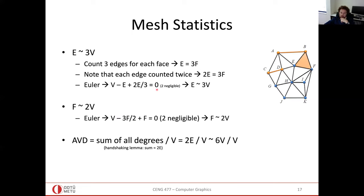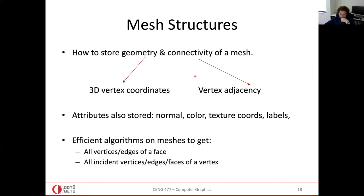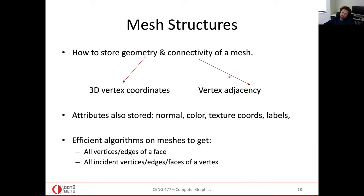Now let's talk about structural details on meshes in terms of programming — how do we store a mesh in our program? We will definitely need to store the vertex coordinates and the connectivity. Optionally, we can also store normal vectors, color vectors, texture UV coordinates, or segmentation labels at each vertex. In a basic mesh format you will see coordinates followed by the triangulation or quadrangulation connectivity.